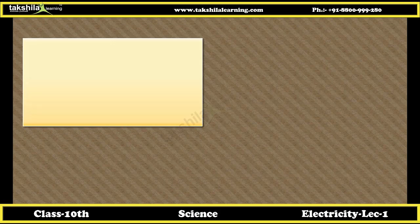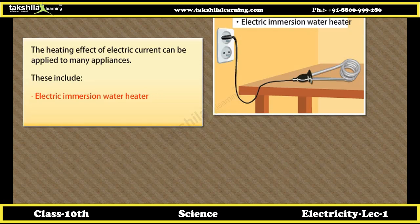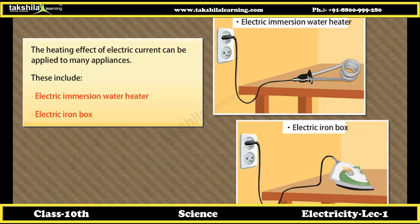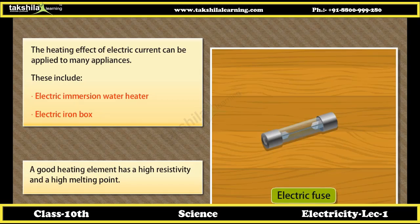Practical applications of Joule's Law. The heating effect of electric current can be applied to many appliances, including electric immersion water heaters and electric iron boxes. A good heating element has high resistivity and a high melting point. An electric fuse is another example — a rating of 3A means the maximum current it can sustain is 3A.